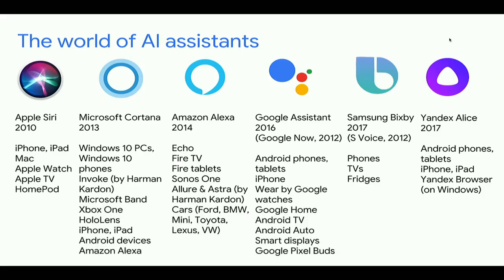Looking at the AI Assistant landscape, let's focus on Google Assistant. Some say it came late to market — Siri, Cortana, and Alexa were all there first. But the underlying technology — ML, AI, NLP — was part of Google's strategy for many years. We had Google Now and other technologies. So Google came really prepared and delivered a truly high-quality developer platform. Don't be afraid it's late to market; it's a top-notch platform, especially for developers.